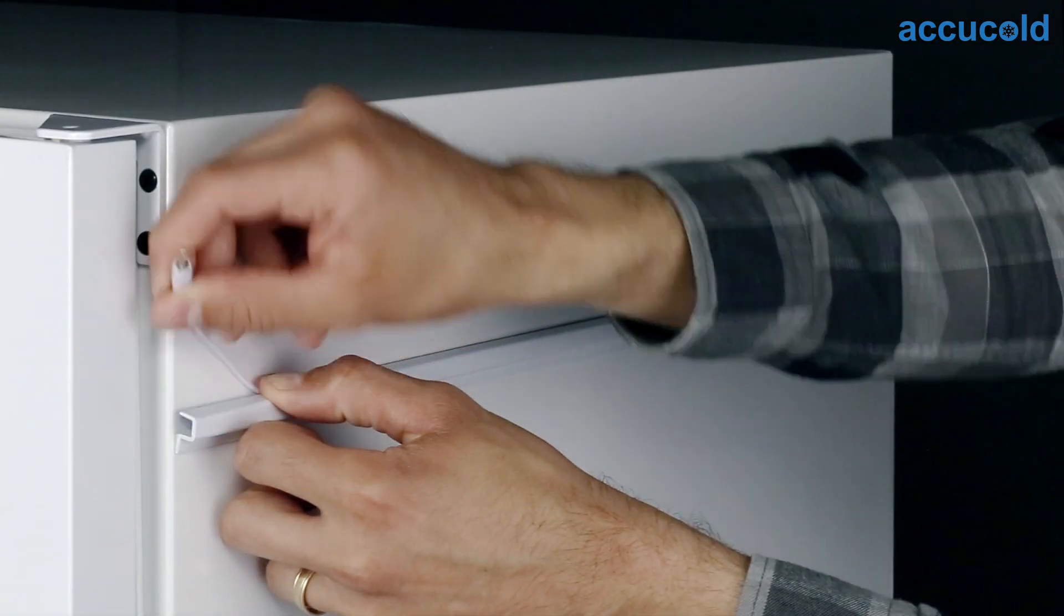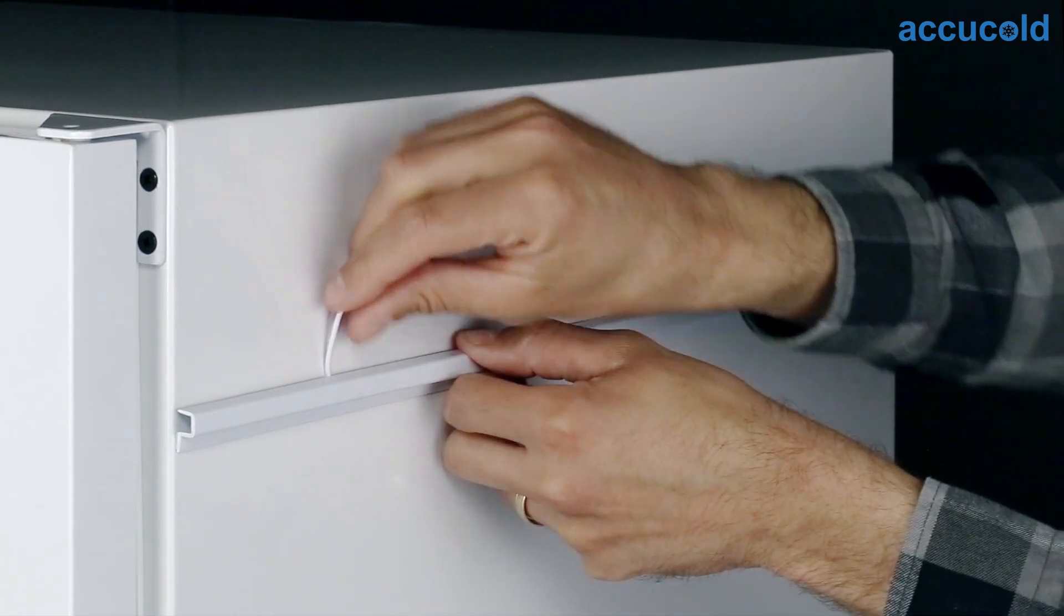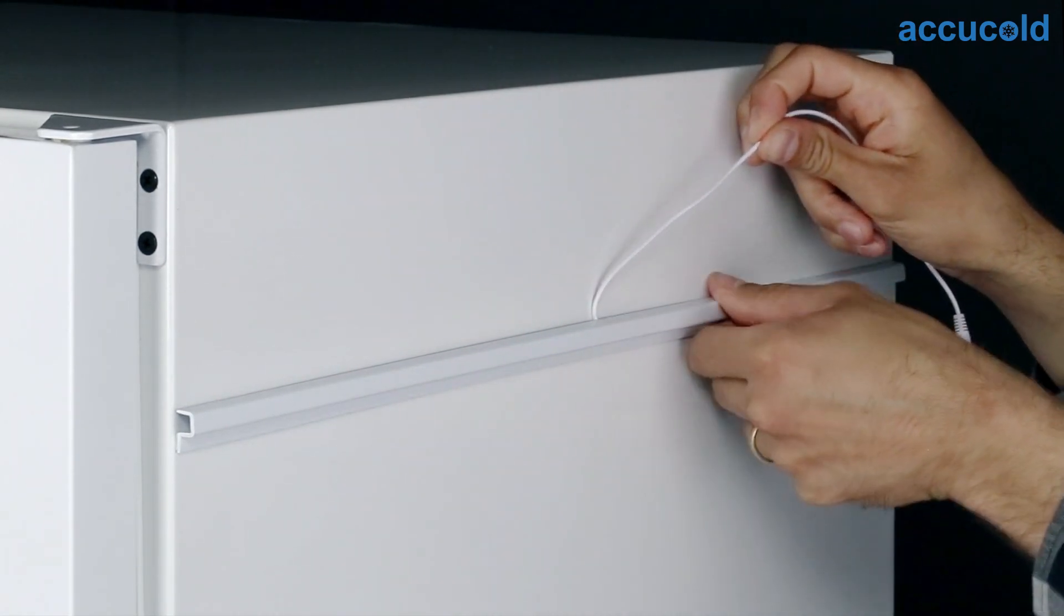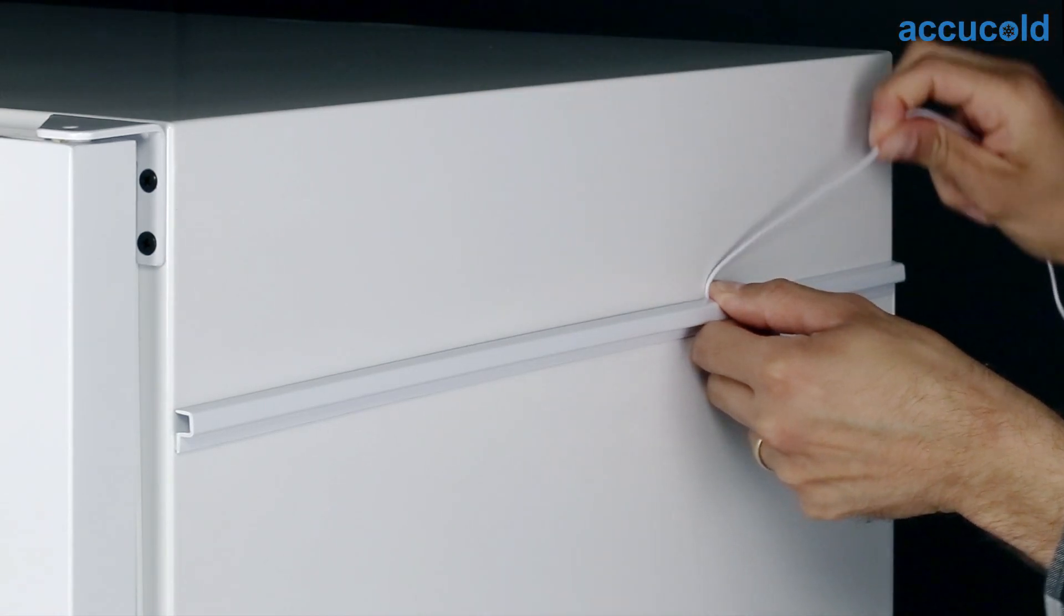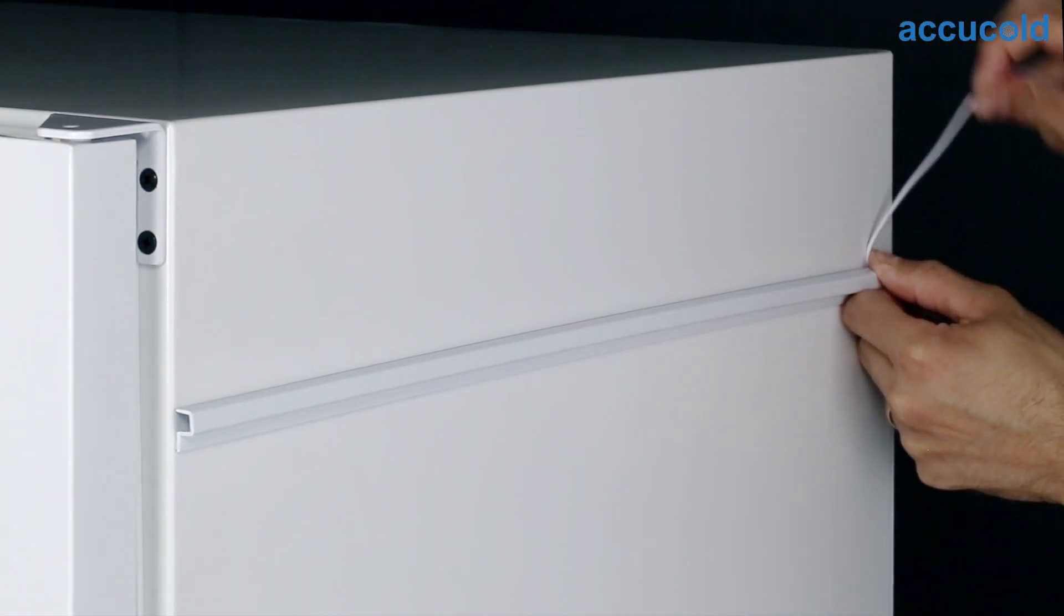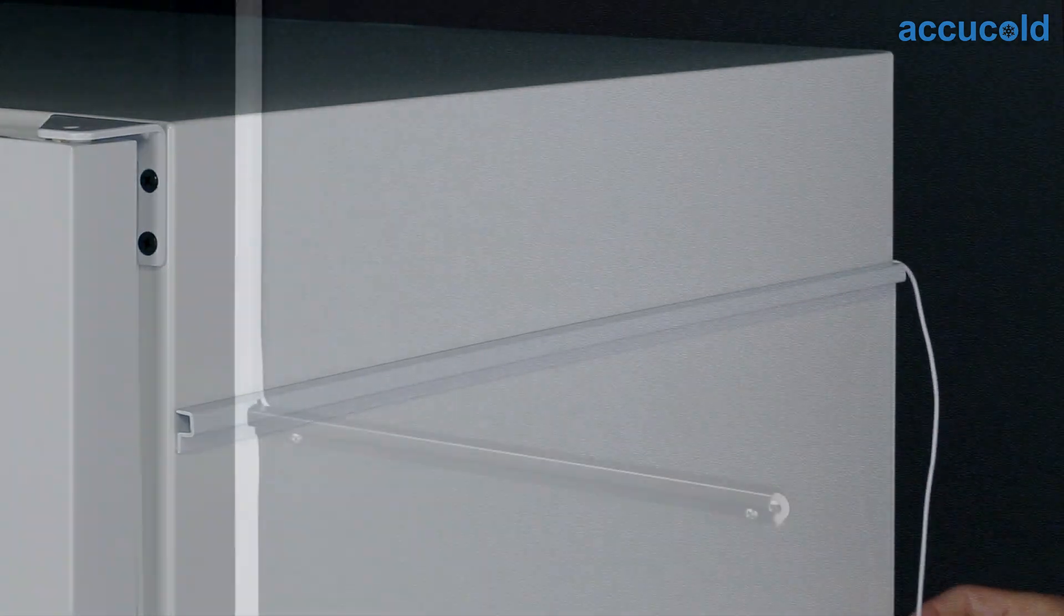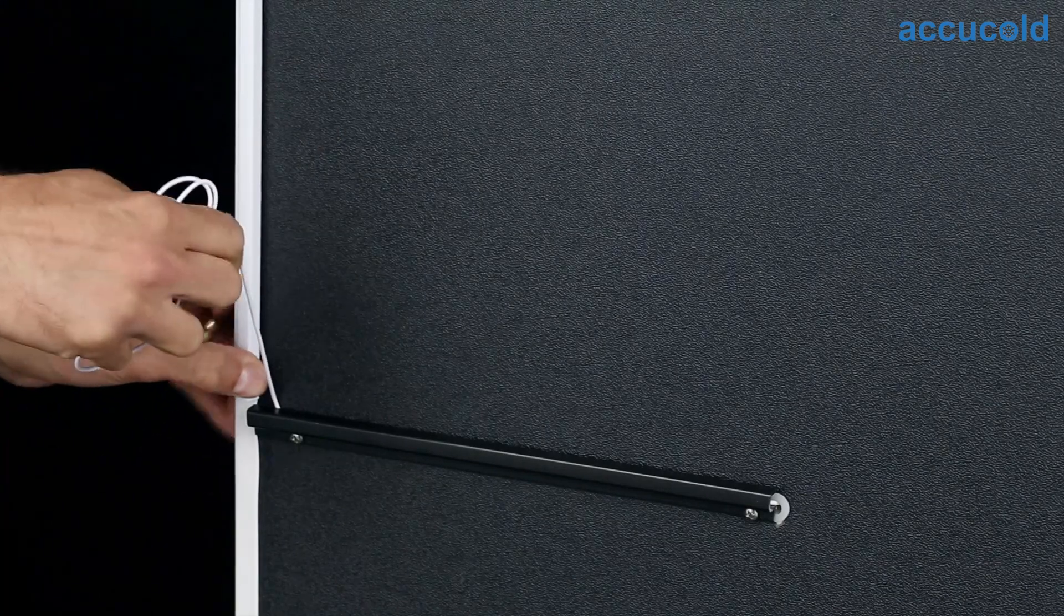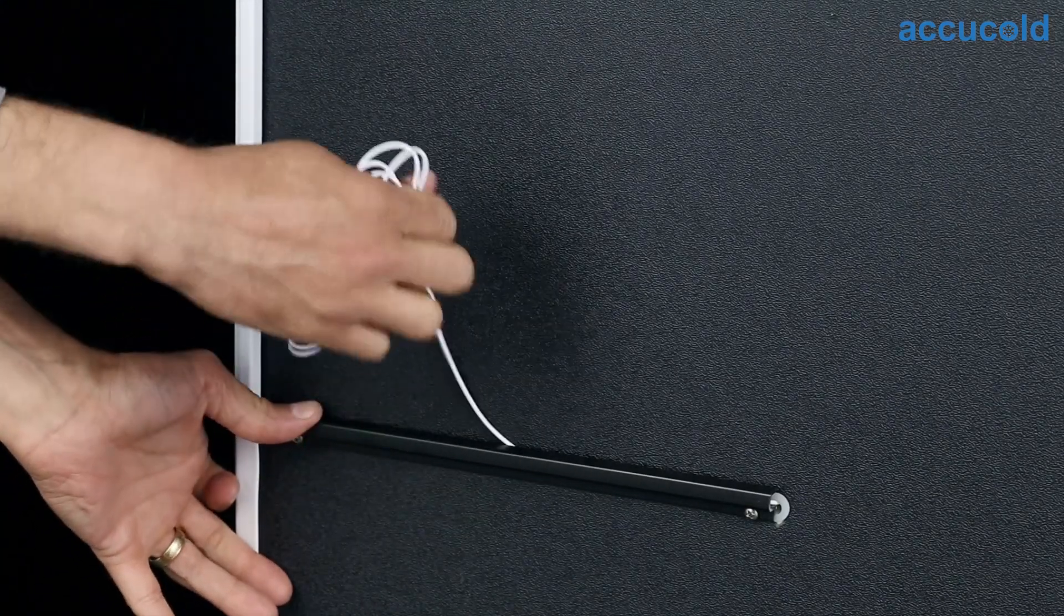If the wire runs through a channel on the side of your appliance, start at the front of the unit, pull the top of the channel away from the side, and lift the wire out of the channel. Proceed towards the back of the appliance until the wire has been removed. Repeat these steps for any channels on the back of your appliance until you reach the probe hole.